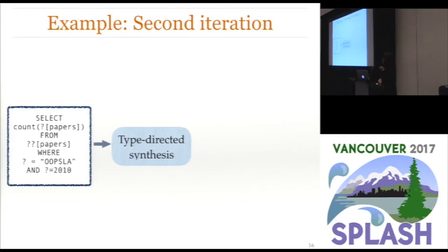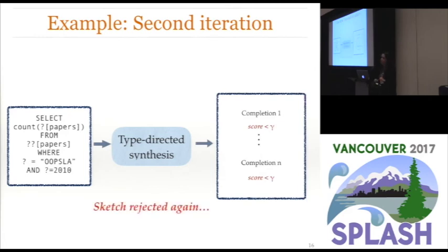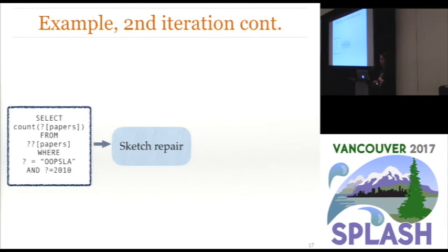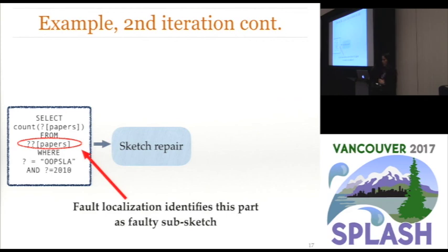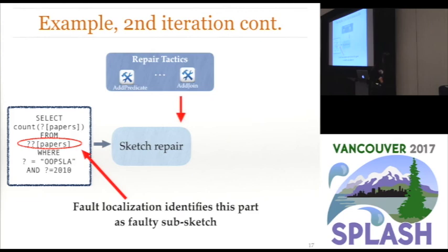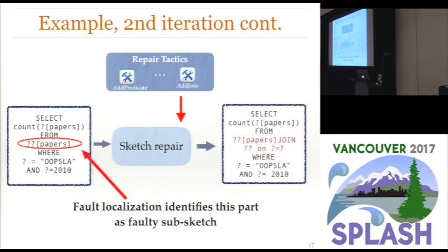In the second iteration, we again go back to type-directed synthesis and try to fill each hole, but there are again no high-confidence completions of the sketch, so we again try to perform repair. In this case, fault localization tells us that the likely culprit is the FROM clause — the intuition being that there is no single database table that contains both the entry 'OOPSLA' and the number 2010. Our repair tactics suggest introducing a join operator, so our new modified sketch selects from not just a single table, but from the join of two different tables.